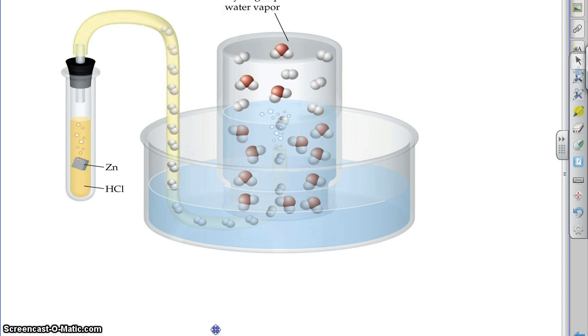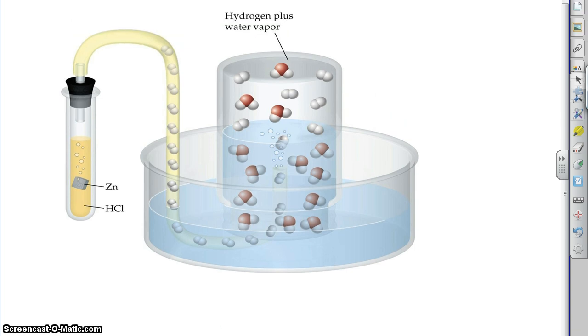So here we have a diagram of what I'm talking about. We have a reaction in here of zinc with hydrochloric acid, a single displacement generating hydrogen bubbles. Those hydrogen bubbles would just escape out into the air but we want to collect them. So we put them into this tube and we will put them into this jar.